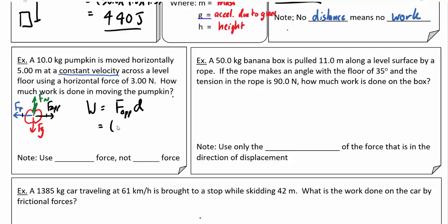We're going to use the applied force. Three newtons times 5.0 meters gives 15.0 joules of work. When calculating work, we don't use net force — that might seem counterintuitive, but you're definitely using energy to push the pumpkin. It's just not accelerating, so there's no net force. Generally, use the applied force, not the net force, when calculating work.